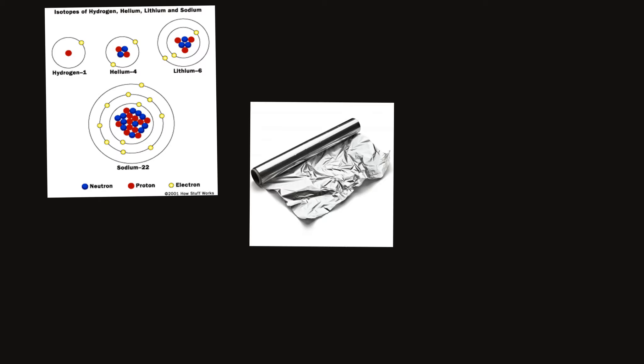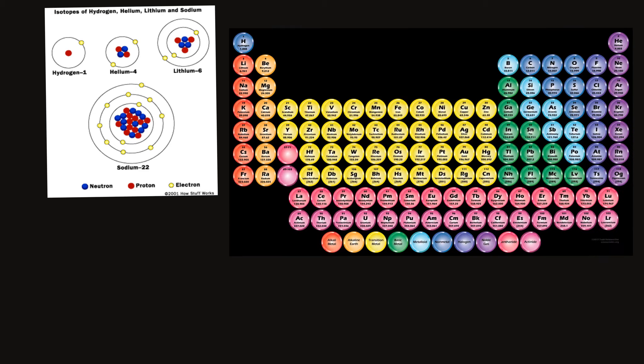A substance that's made up of one single type of atom is considered to be an element. For example, you have aluminum foil. Aluminum foil is an element because it's only made up of one type of atom, which is aluminum. A list of all the elements and all the different types of atoms can be found on a periodic table.